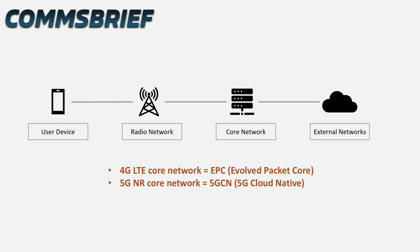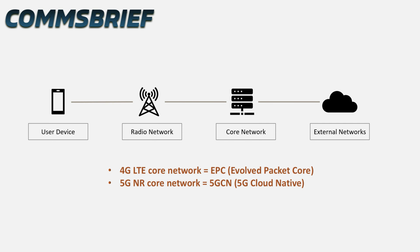The core network in 4G is called Evolved Packet Core, or EPC, and the core network in 5G is called 5G-CN, or 5G cloud-native core network. 4G networks are based on LTE technology and 5G networks are based on NR technology. Both 4G and 5G networks are IP only, which means they offer voice and text, so SMS services, using a different approach than the earlier 2G and 3G networks. 2G and 3G networks employ two technologies: circuit switching (CS) and packet switching (PS) — circuit switching for voice calls and texts, and packet switching for mobile data. From 4G onwards, all services are delivered through the packet-switched part of the mobile network.